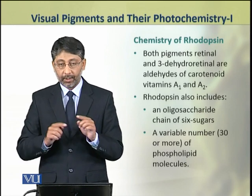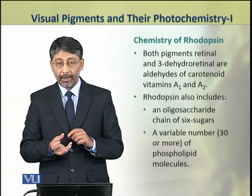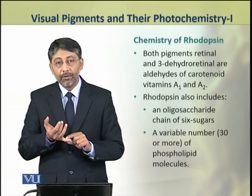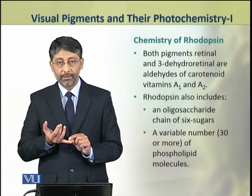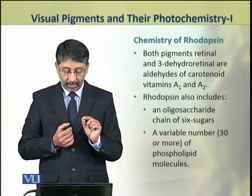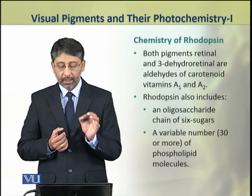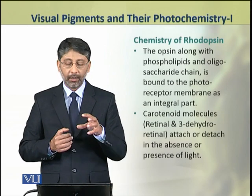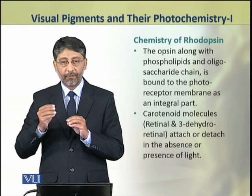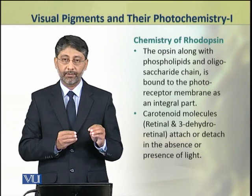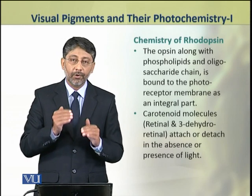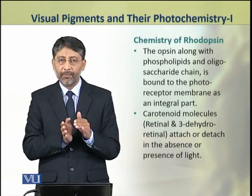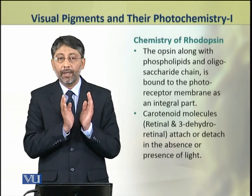In addition to these two components, the rhodopsin protein is also conjugated with an oligosaccharide chain of 6 sugars and a variable number of phospholipid molecules, which may be 30 or more. The opsin along with the phospholipids and oligosaccharides is bound to the photoreceptor membrane as an integral part.